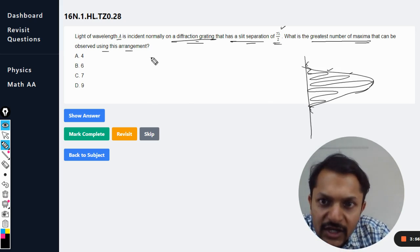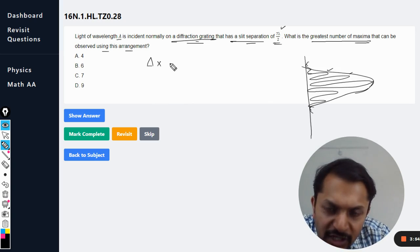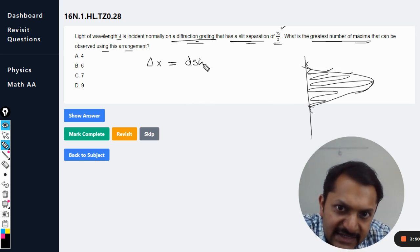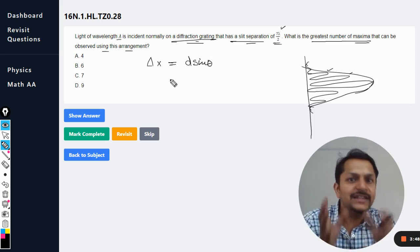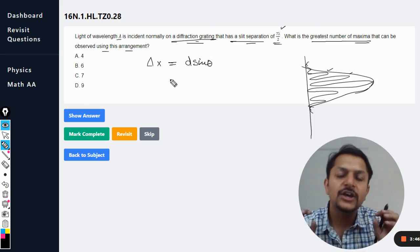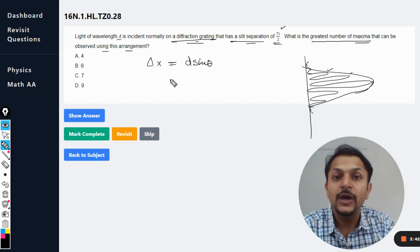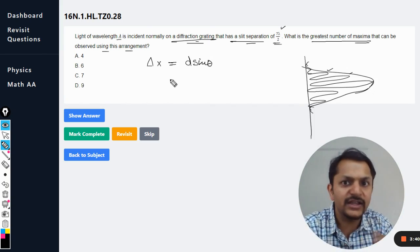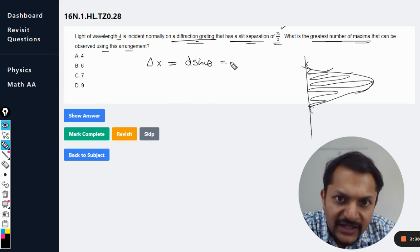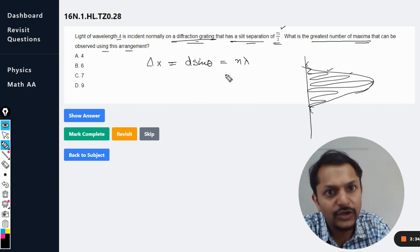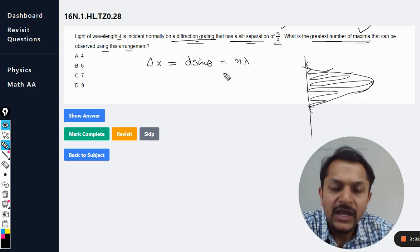How do we do it? We know that the path difference will be d sine theta, because at the end of the day interference is taking place. We are using the formula for the interference - diffraction is only modulating the wave, nothing else. So d sine theta is equal to n lambda in case of constructive interference because we are interested in the maximas.